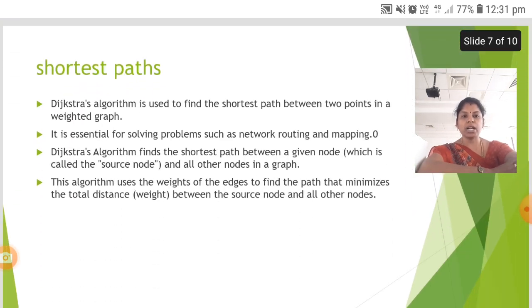The next is the shortest path. Dijkstra algorithm is used to find the shortest path between two points in a weighted graph. It is essential for solving problems such as network routing and mapping.